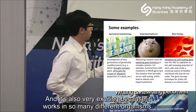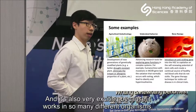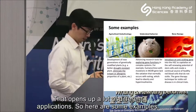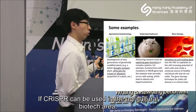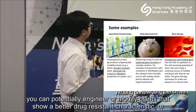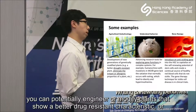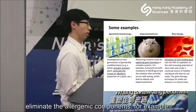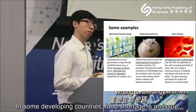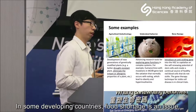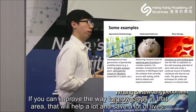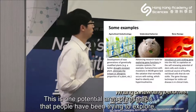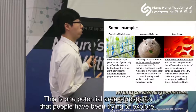It is very exciting because it works in so many different organisms, which opens up a lot of different applications. For example, in agricultural biotech, you could potentially engineer or modify plants that show better drought-resistant characteristics, or eliminate allergic components. In some developing countries, food shortage is really an issue, so if you can improve the way to grow crops in that area, that will help a lot and save many lives.